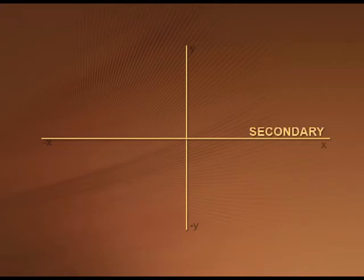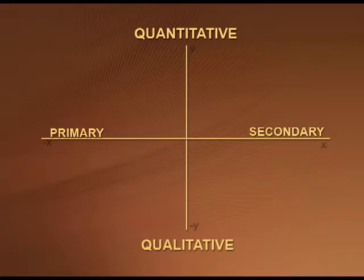The data sociologists collect can be primary and quantitative, primary and qualitative, secondary and qualitative, or secondary and quantitative. These various combinations can be understood through an illustration. Looking at a graph with secondary sources on the x-axis, quantitative data on the y-axis, primary on the x' axis, and qualitative on the y' axis, we can fill four quadrants to see what kind of method and data exists within each category.